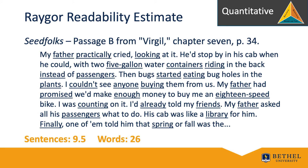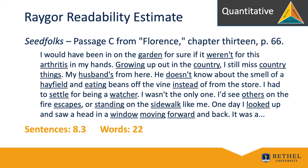Here is an example with passage B. Again, note the underlined words, as they represent those that are six letters or more, and again the total number of sentences that are counted, including any fraction. Finally, as Rager readability requires three 100-word chunks, we see passage C from Seed Folks. Again, note the underlined words that represent those that are six letters or more, and the total number of sentences that are counted, including any fraction.